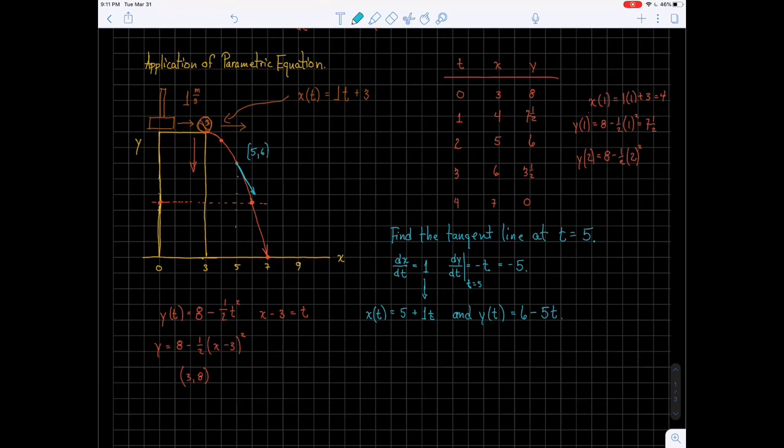And then if we wanted to write this as just one final equation, we could say that x minus 5 equals t. Now plug that in over here. So I have y equals 6 minus 5 times x minus 5. So this is 6 minus 5x plus 25, or adding those together, minus 5x plus 31.